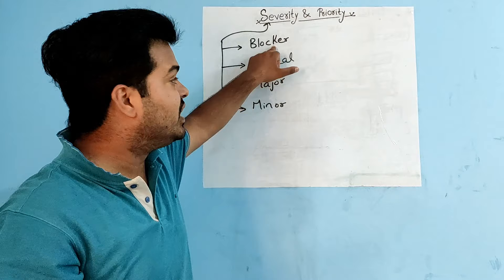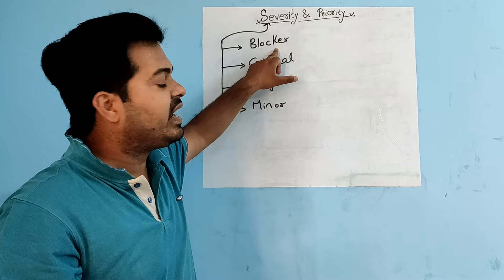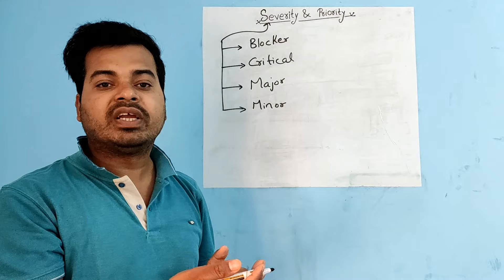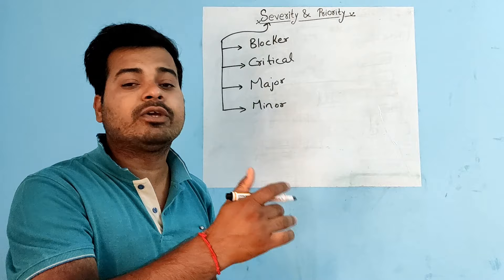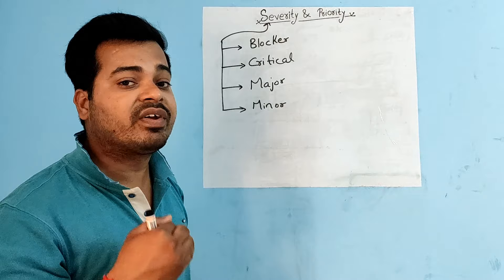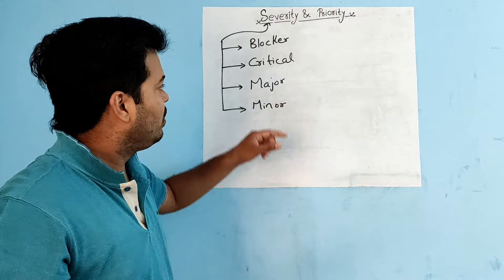An example of a blocker severity bug: you are trying to log into the application with your username and password, but it is not allowing you to proceed to the home page — it shows an internal server error, or it takes you to a blank page. Your full functionality is blocked and you cannot proceed to the next step. That is a blocker severity bug.